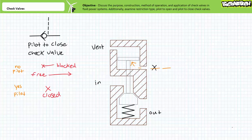the connecting rod pulls the poppet closed and fluid can no longer pass in either direction. When pilot pressure disappears, the poppet is free to move and normal check valve behavior resumes.